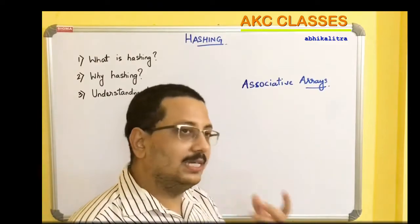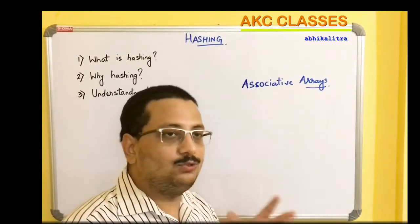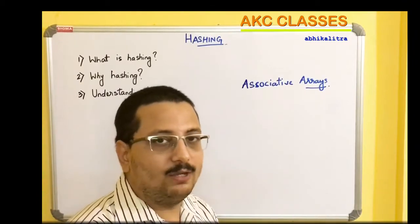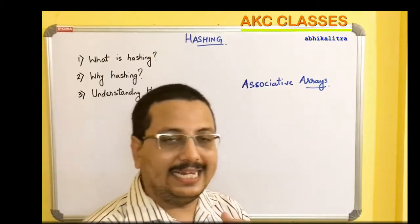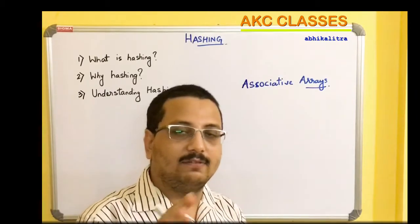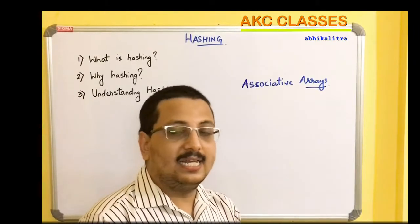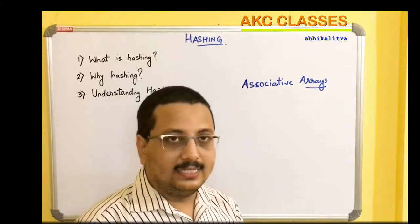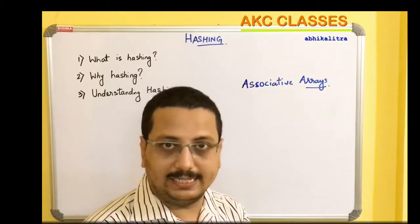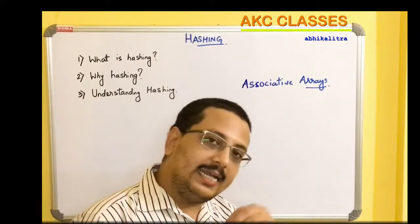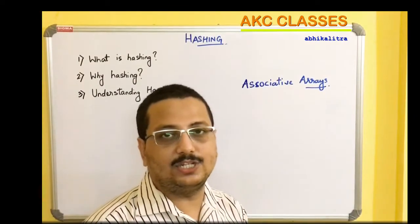To understand this, let's take an example. Consider a class where there are many different students and each student has its own unique student ID. If I want to store the grades against a particular student ID, then the student ID will be the index of the associative array and the grade will be its corresponding data value. Similarly, if I have assigned a unique assignment to all students and want to assign a grade score to each assignment, then the assignment name will be the index and the corresponding data value will be the grades for each individual assignment.